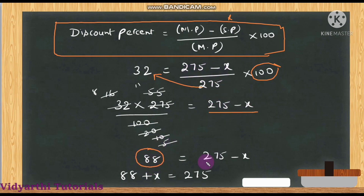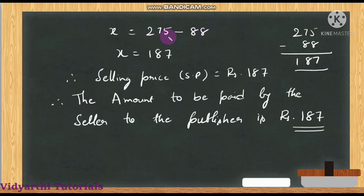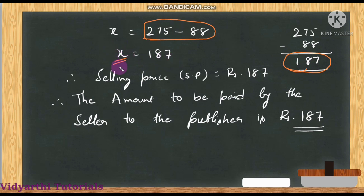So 88 = 275 − x. Moving −x gives x = 275 − 88 = 187. So x = 187. Selling price is ₹187. Therefore, the amount to be paid by the seller to the publisher is ₹187.